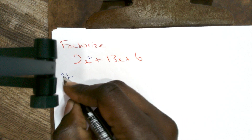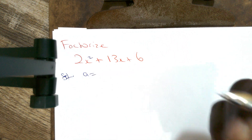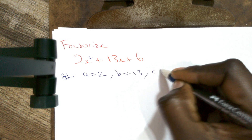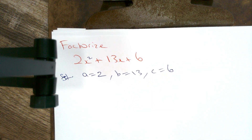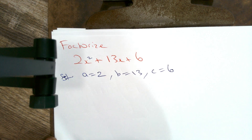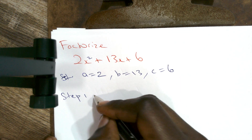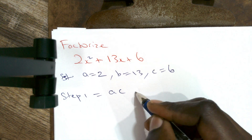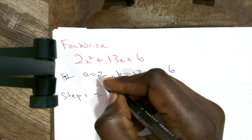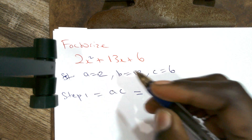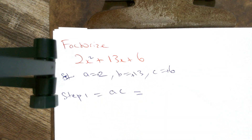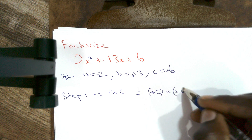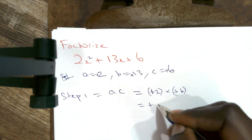Before step one, let's establish a, b, and c. A equals 2, b equals 13, and c equals 6. Adding the signs: a equals positive 2, b equals positive 13, c equals positive 6. Step one: find a times c. So a times c equals positive 2 multiplied by positive 6, which gives us positive 12.